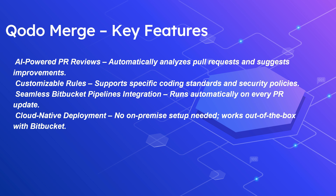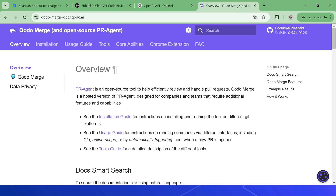It offers seamless Bitbucket pipeline integration — running automatically on every PR update — and is cloud-native with no on-premise setup needed. A key difference from the ChatGPT Code Review plugin is that Qodo Merge supports ignoring specific files from automated reviews. However, it does not support adding comments on individual files; it adds general PR-level comments instead — this restriction applies specifically to the Bitbucket pipeline integration.